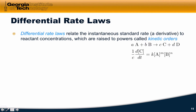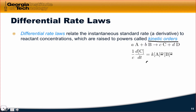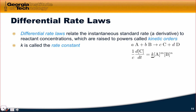To reiterate: differential rate laws relate the instantaneous standard rate to reactant concentrations. Each of the powers that the reactant concentrations are raised to are called kinetic orders. The total order of the reaction is generally written as the sum of the two, m plus n. We say that a reaction is first order for m=1, second order for m=2, third order for m=3, et cetera. K, the constant of proportionality that relates this expression back to the standard rate, is called the rate constant.